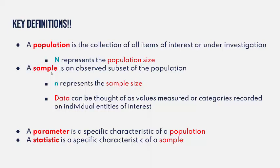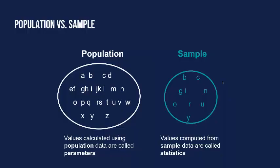Parameters are values calculated from a population, and a statistic is a specific characteristic of a sample — a statistic comes from a sample. To wrap our ideas around population, sample, parameter, and statistic, here's a kind of silly example.